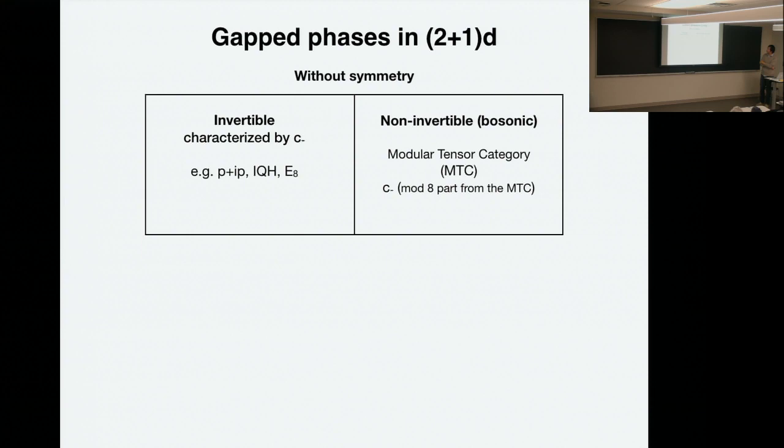So in 2+1, while there are lots of invertible phases, they are all characterized by a chiral central charge. People are familiar with this for conductors, and it was only a version called the E8 states. There are of course all these states with topological excitations, which are non-invertible in this language. For most of the talk, I'll just restrict myself to bosonic states, and these are all described by a mathematical structure called the modular tensor category.